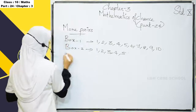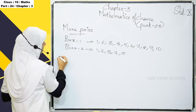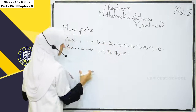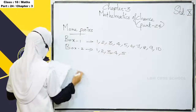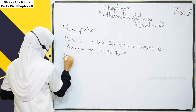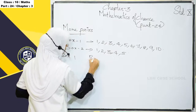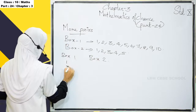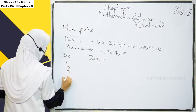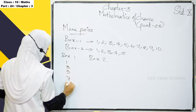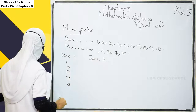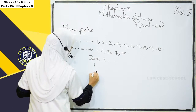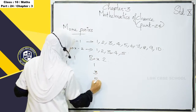Since both being odd, we will find the odd numbers in each box. In Box 1, the odd numbers are 1, 3, 5, 7, 9. Then from Box 2, the odd numbers are 1, 3, 5.